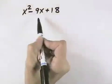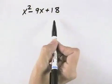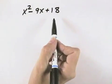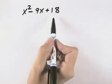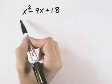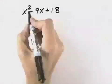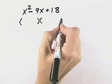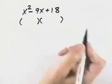In this particular problem of x squared minus 9x plus 18, we have no greatest common factor, so we don't have to start there. Instead, we'd say that there are three terms, so we'd set up our parentheses for a trinomial.